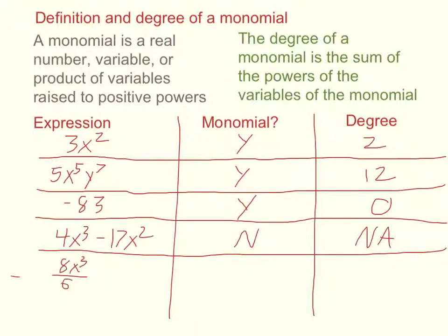Something like this would be considered a monomial, because there's no variable in the denominator, or we're not raising a variable to a negative power. This is the same as 4 thirds x cubed. And 4 thirds is a real number. x cubed is a variable raised to a positive power, so it is a monomial.